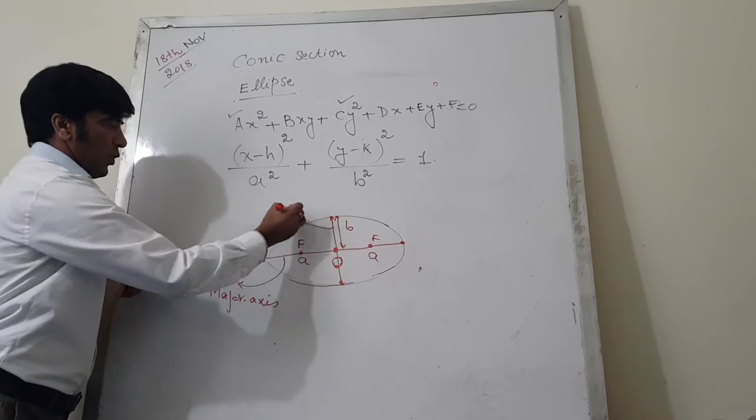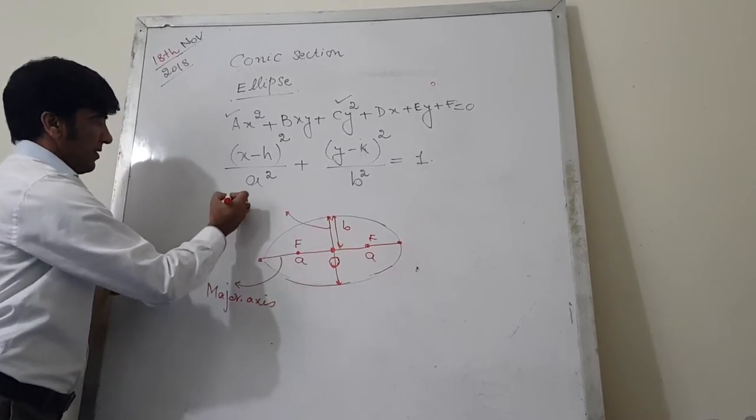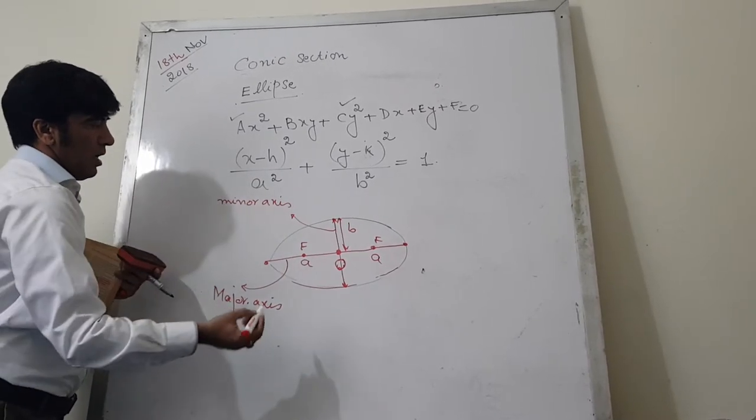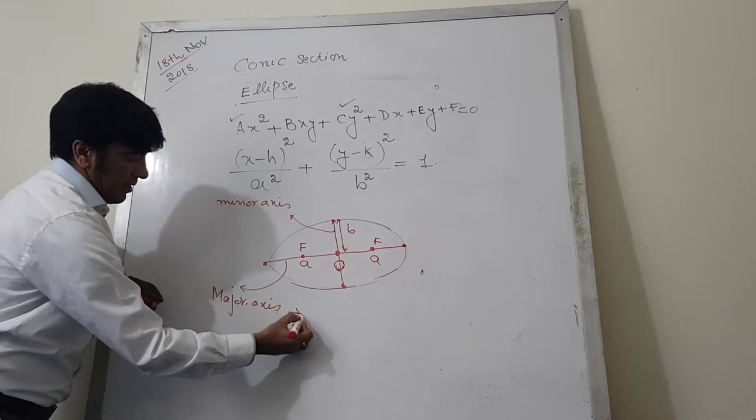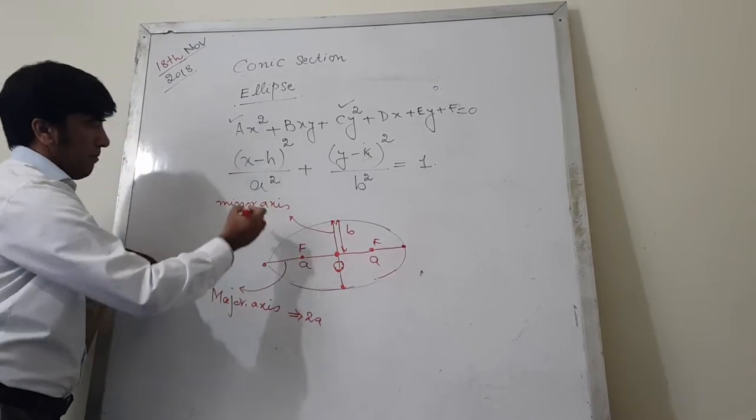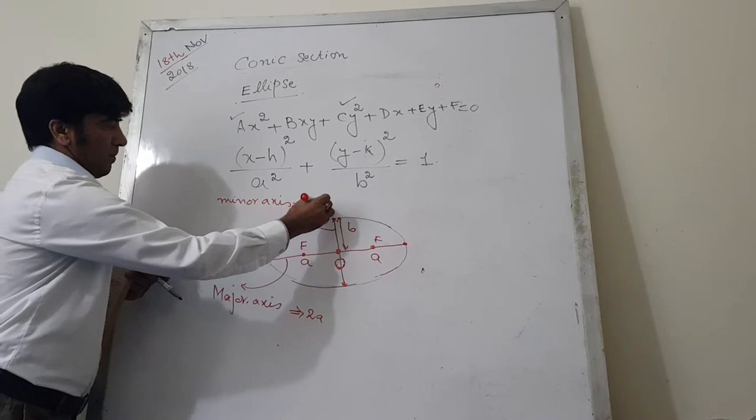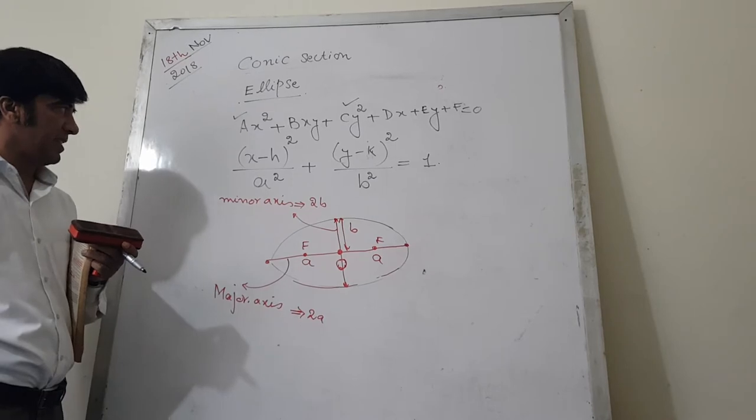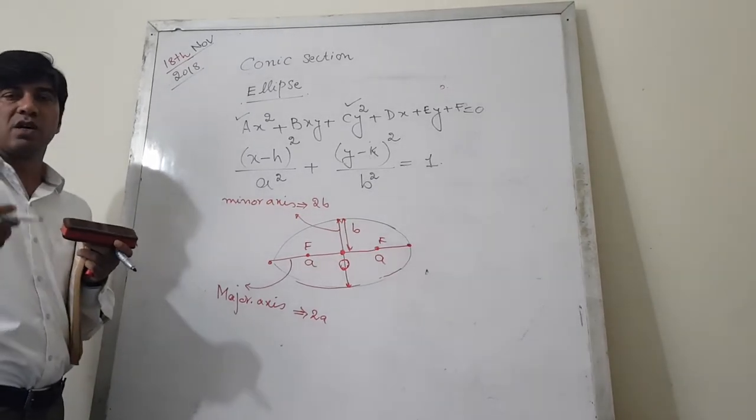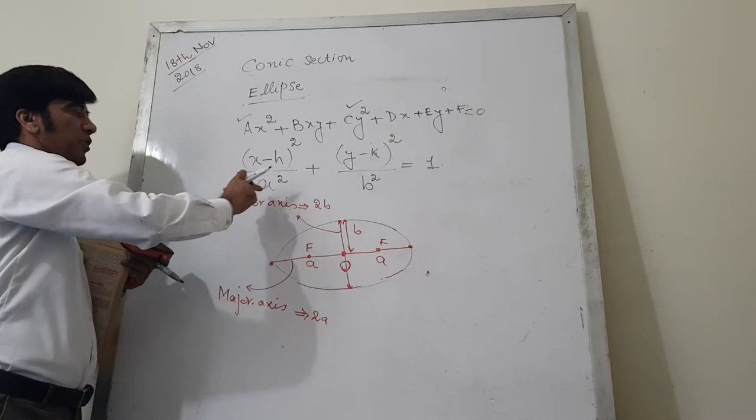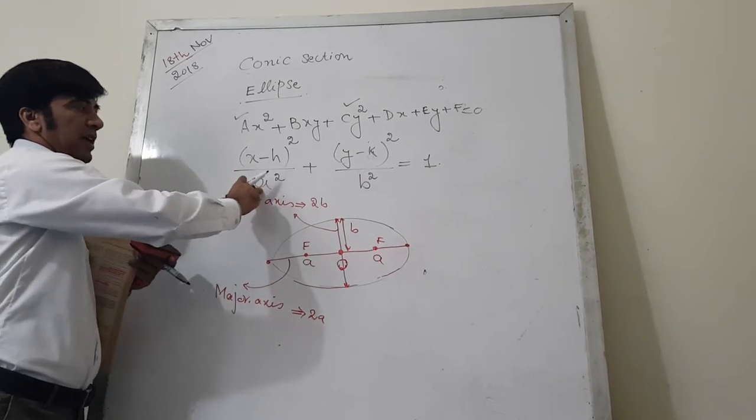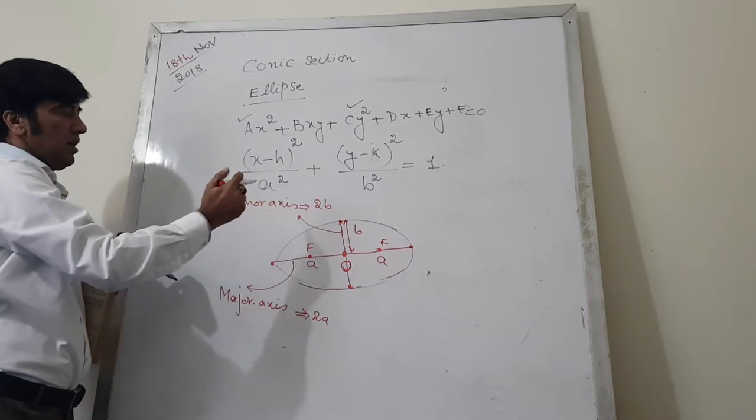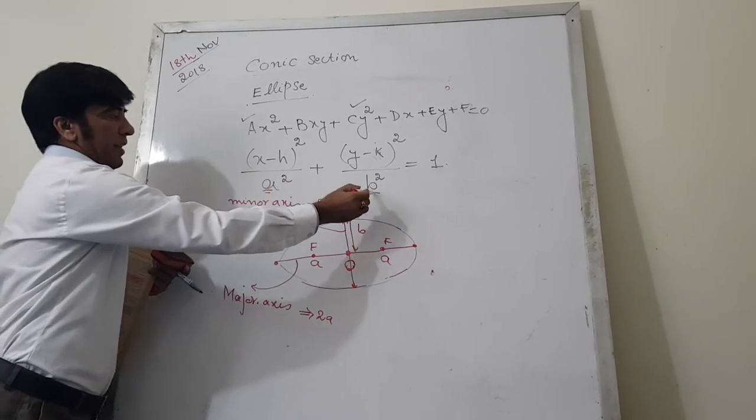This is, as I told you, called minor axis. Major axis length is 2a and minor axis length is 2b. You can easily calculate the length of major axis and minor axis if you have converted your quadratic equation into this form where you already see the values of a² and b². This will help you calculate the length of major axis and minor axis.